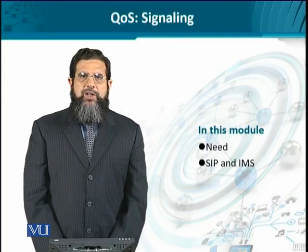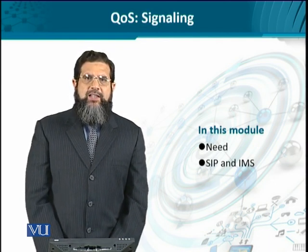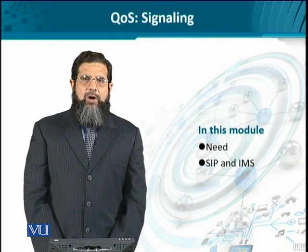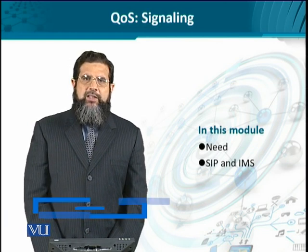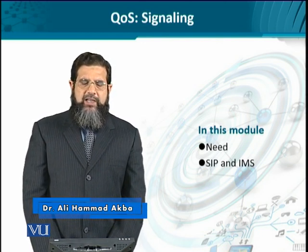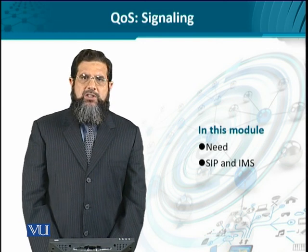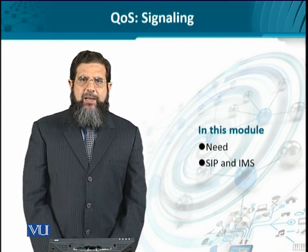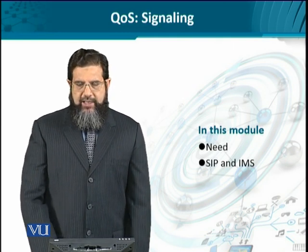Another important functional requirement for QoS provisioning in NGN is signaling. When we were discussing admission control, signaling actually came under discussion. However, we need to look at it in isolation as well. Just like admission control makes sure that certain types of traffic are entertained by the network and certain services are denied and certain user requests are rejected, signaling is basically the mechanics or the implementation that helps a great deal in admission control. So we say that admission control and signaling go hand in hand.